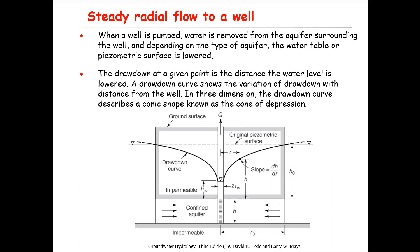So here we have three definitions. The first one is the drawdown. The drawdown at a given point is the distance the water level is lower. The dashed line is the piezometric surface that is lower to this point, so this distance is the drawdown.